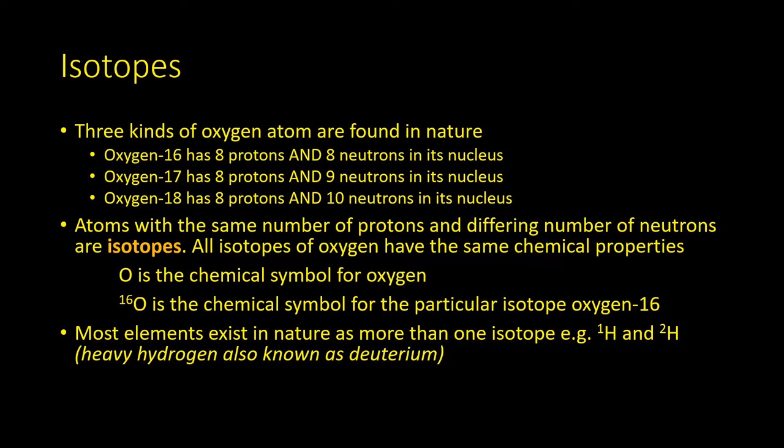Most elements exist as more than one isotope. For example, hydrogen exists as normal hydrogen, 1H, and 2H heavy hydrogen, which is also known as deuterium.